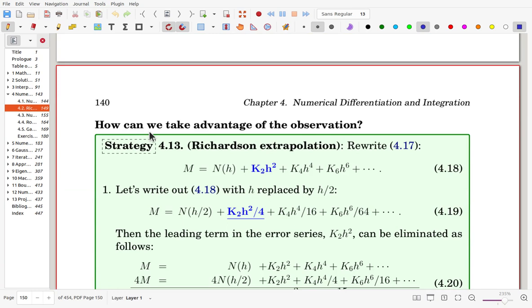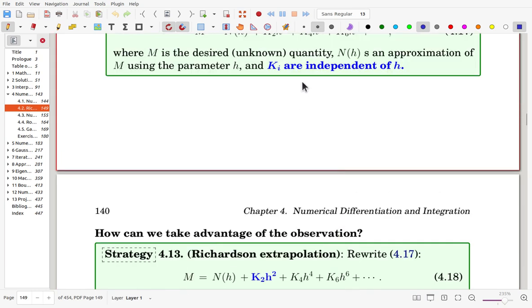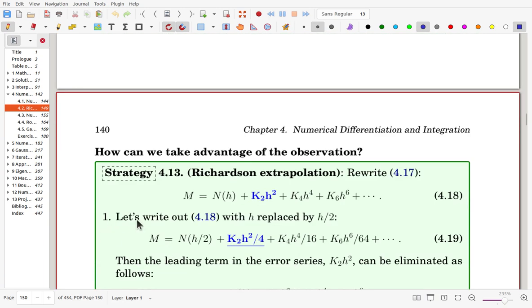How can we take advantage of the observation? We rewrite that equation here again. And now we try to write out the equation with h replaced by h over 2, which means that the mesh is now, the grid is refined. Rather than h, we are using half the h. Then the desired quantity is the same. The numerical scheme will be obtained with h over 2. The error will be here. h must be replaced so that this will have such quantities. The leading term in error is now the value becomes a quarter of the original one.